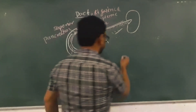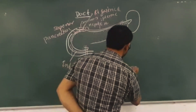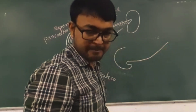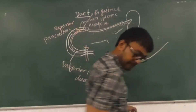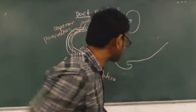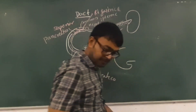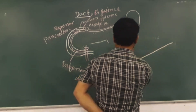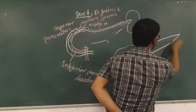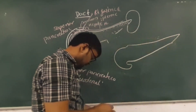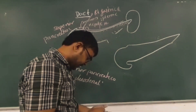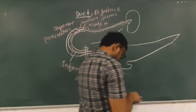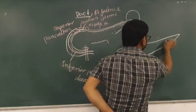Now the venous drainage of the pancreas. The venous drainage is from the splenic vein, the superior mesenteric vein, and the portal vein.